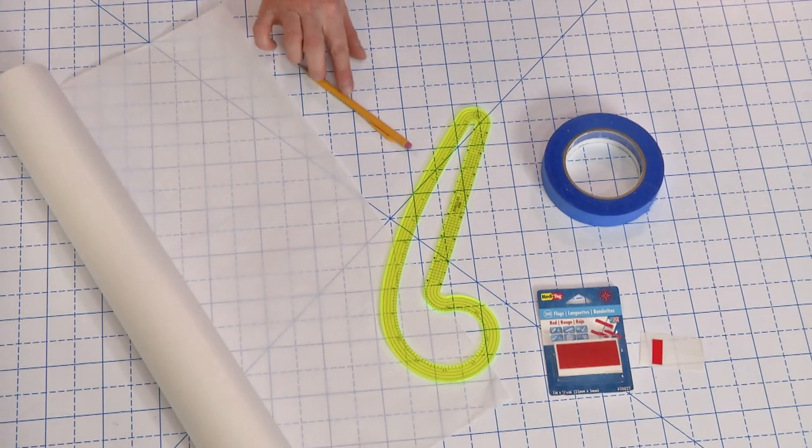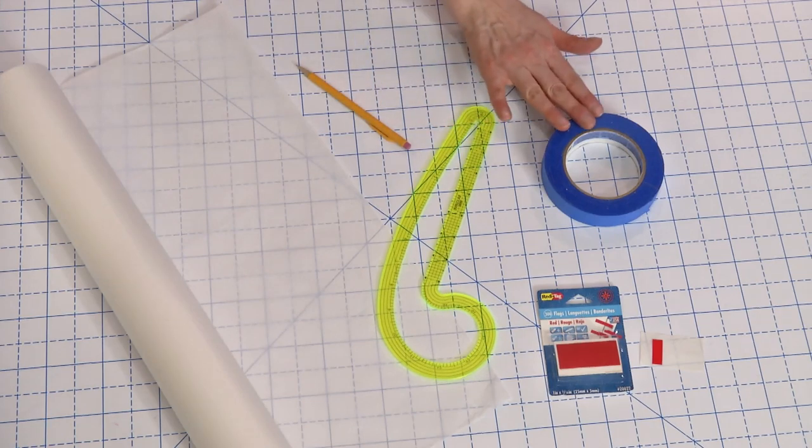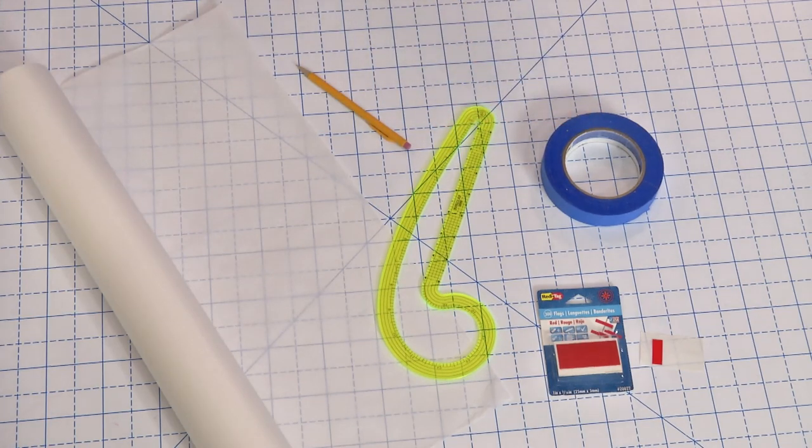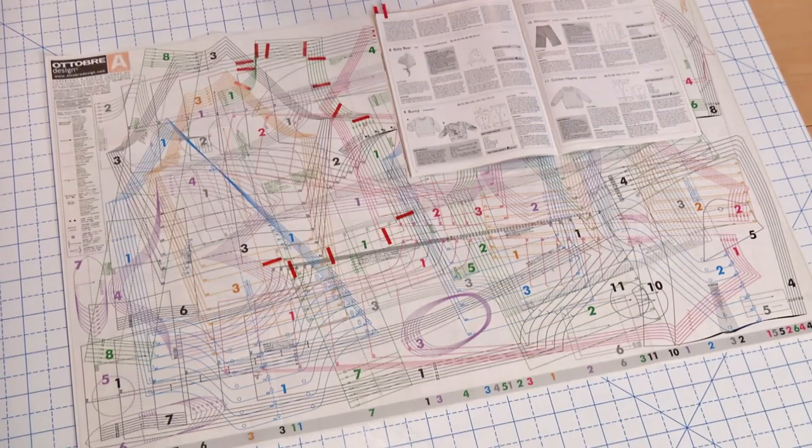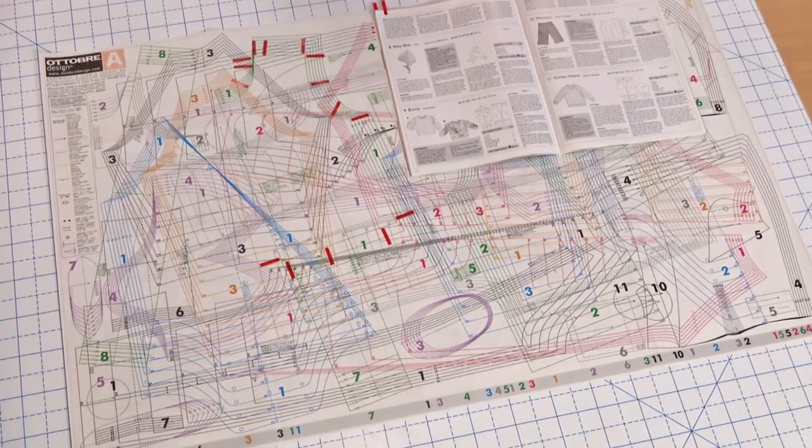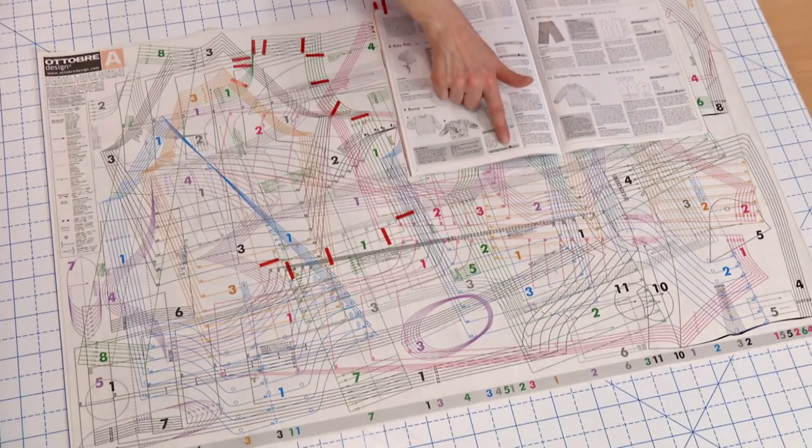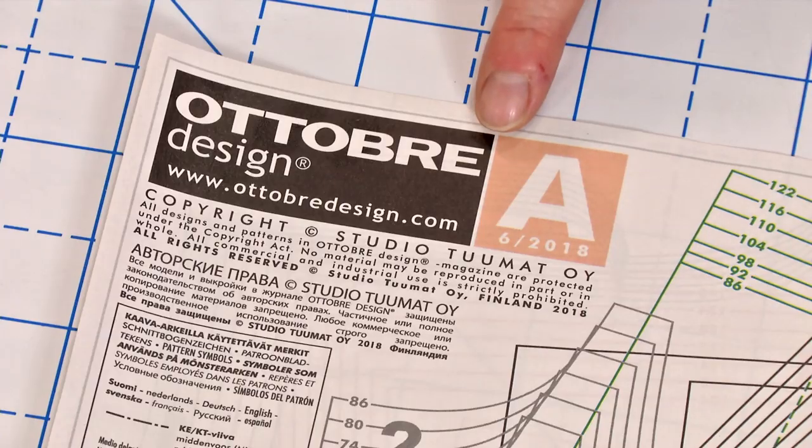You'll also need a mechanical pencil, a curved ruler, and some painter's tape or post-its. Remove the pattern insert from the magazine. Sometimes there are multiple sheets. Check the pattern instructions to identify the sheet or sheets you need.